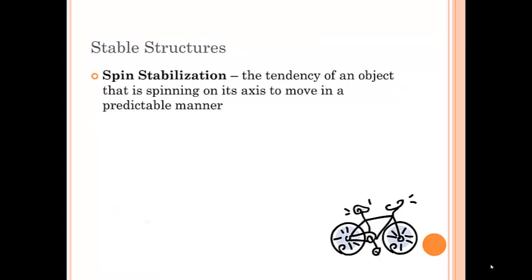Sometimes structures or objects are designed to spin. And sometimes the spinning part of that stabilizes the structure. So we talk about spin stabilization, which is the tendency of an object that is spinning on its axis to move in a predictable manner. The faster a bicycle wheel spins, the more stable it is.